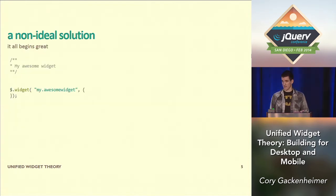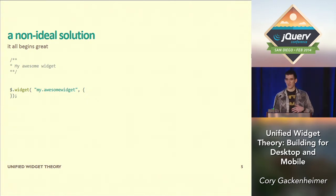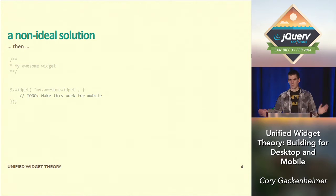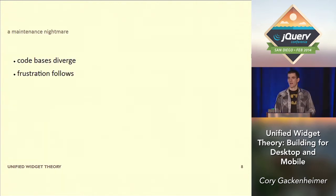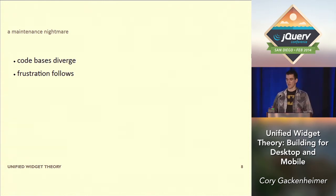So what does that look like? You've got a widget built for desktop and mobile, it works great in both places, but you've separated them. Then you make a change to one and say, let's just add this feature later into mobile. And you've already diverged — it makes people very angry and just becomes a maintenance nightmare. It's what you want to avoid. We're going to talk about how we use one unified widget instead of two separate ones.